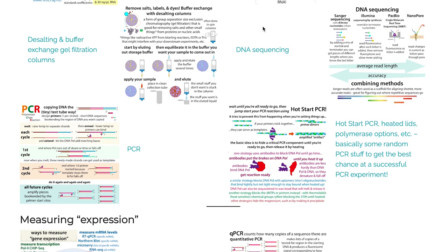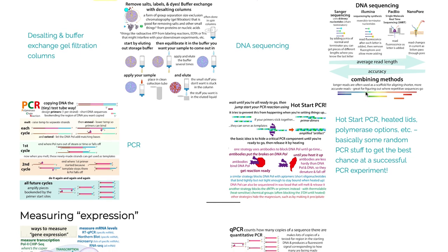You can also sequence nucleic acids — or at least a company can sequence them for you. Common methods include Sanger sequencing, which is lower throughput and is often used when checking the sequence of clones. Nowadays we can also do whole plasmid sequencing, which is getting cheaper and doesn't require specific primers. There's also Illumina sequencing which gives short reads, and tools that give longer reads like PacBio and Nanopore — more on these in other posts.